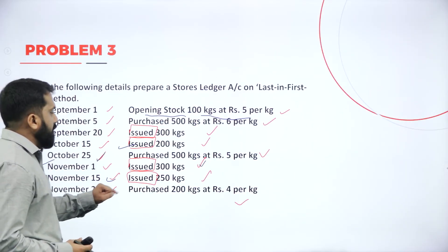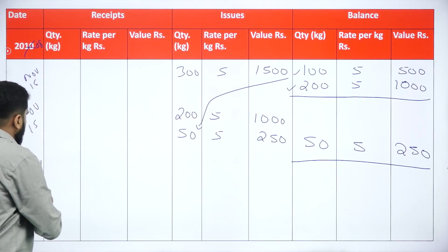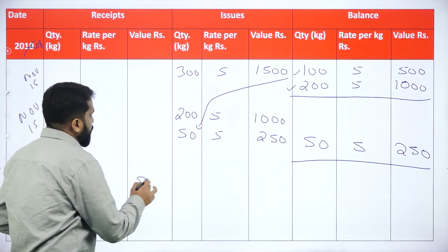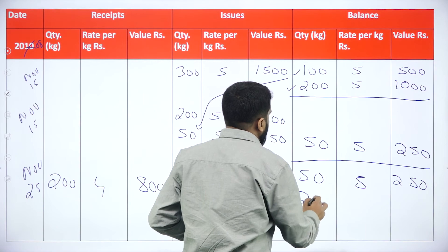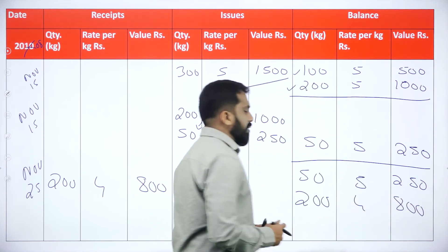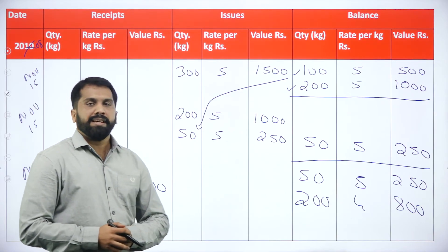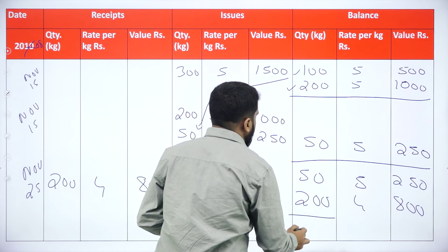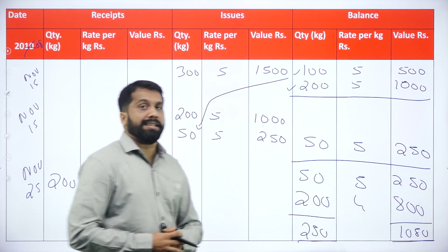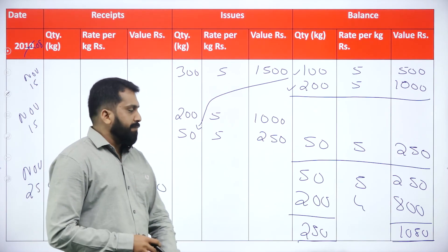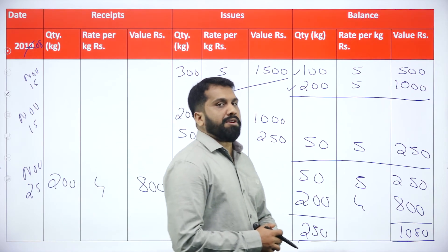Last entry: November 25th — they have purchased 200 at Rs 4, value is 800. For the balance: old balance of 50 kg at Rs 5 — copy paste — and new purchase: 200 into 4, it is 800. Final balance: 50 into 5 is 250, and 200 into 4 is 800. Total number of units is 250. Total value is 1050. Remember, we will not add the price — just number of units 250 and total value 1050. This is all about your LIFO method.